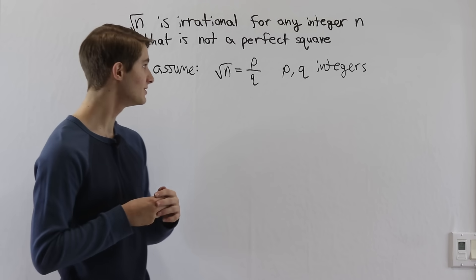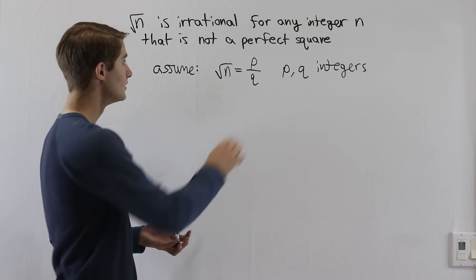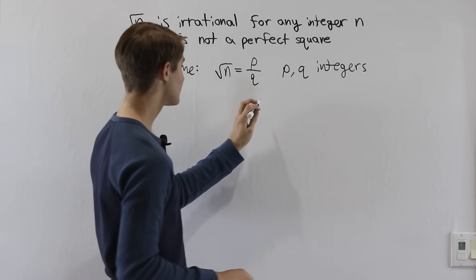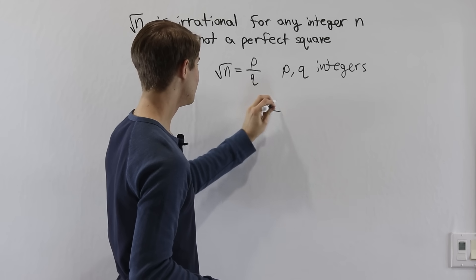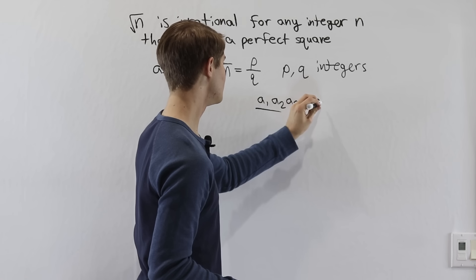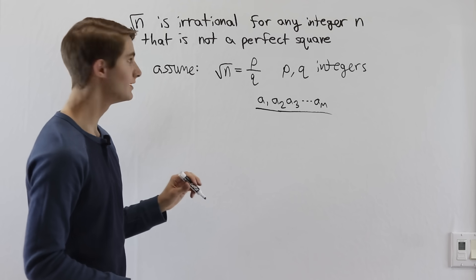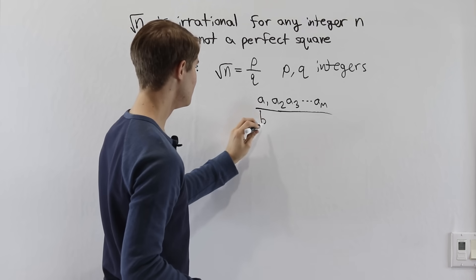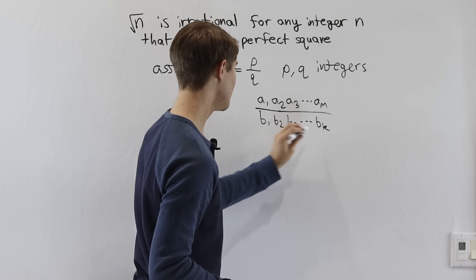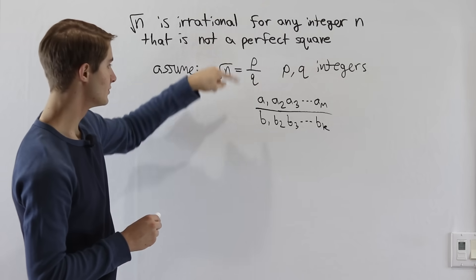By the fundamental theorem of arithmetic, any integer can be written as a product of primes. So if we look at p over q, we're going to look at some prime factors that I'm going to call a1, a2, a3, and so on, up to some value a sub m for p. And then for q, we're going to write b1, b2, b3, all the way up to b sub k. And these are the prime factors that make up the integers p and q.